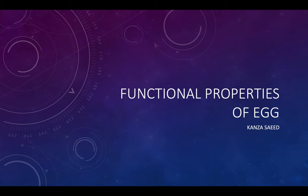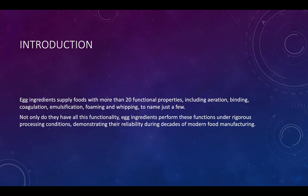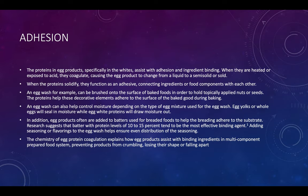In this lecture we will discuss functional properties of egg. Egg ingredients supply foods with more than 20 functional properties, including aeration, binding, coagulation, emulsification, foaming, and whipping. Not only do they have all this functionality, egg ingredients perform these functions under rigorous processing conditions, demonstrating their reliability during decades of modern food manufacturing.